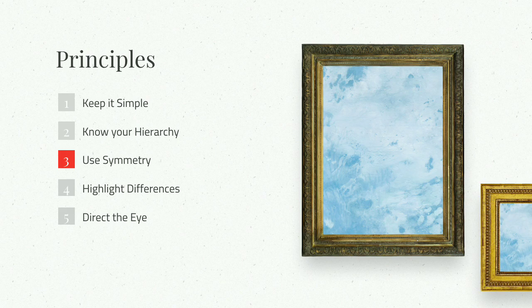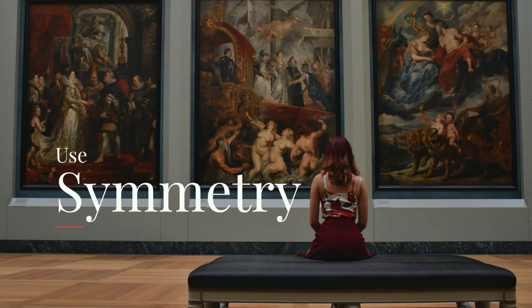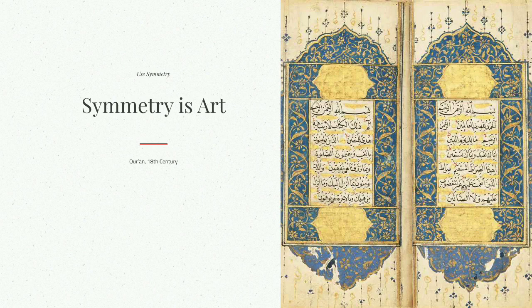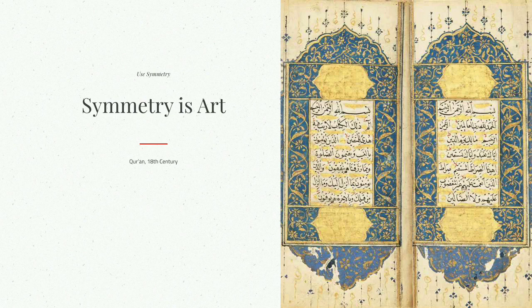The third principle: use symmetry. Symmetry is appealing to people — it's a comforting bit of structure and support. When people see something that's symmetrical, they feel calmer; they feel like they know what to expect. If you want to give people a sense of security and safety in a bit of content, then symmetry is helpful. Repetitiveness is helpful for calming, and if you want to really draw attention to something, that's when you can break away from the repetitiveness.